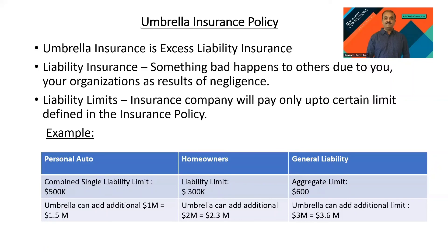Basically, umbrella policy is used only for increasing the liability limits. The core functional theory is: if your underlying policy does not have enough liability limit and you feel you need more based on your personal needs, you can use an umbrella policy as an underlying liability policy. I hope you like my training videos — please subscribe to my YouTube channel.